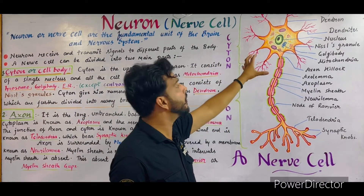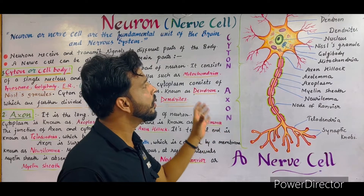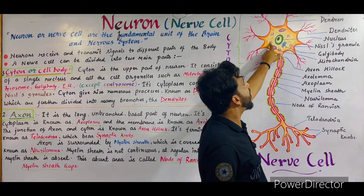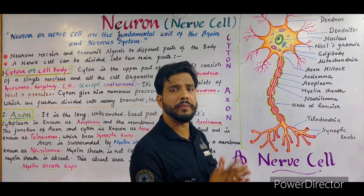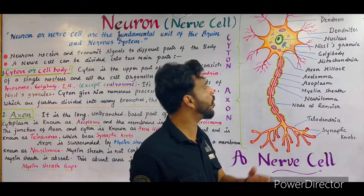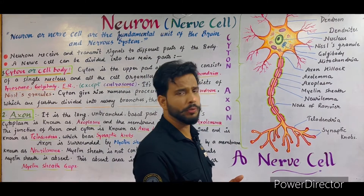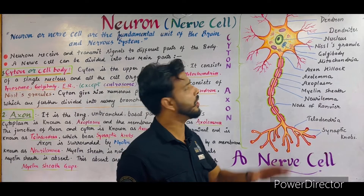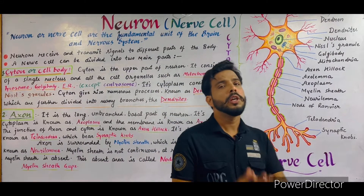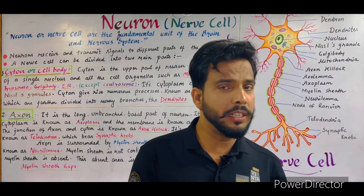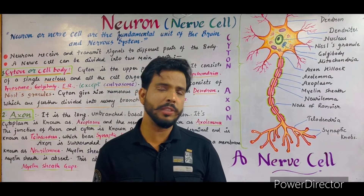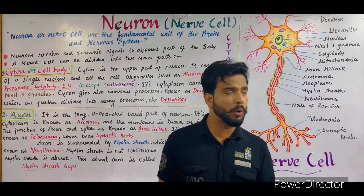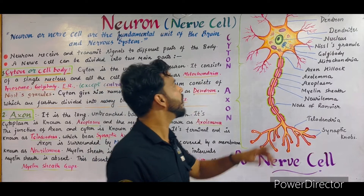The cytone is the upper rounded part of the neuron. The cytone consists of a single nucleus. The cytoplasm of the cytone consists of different kinds of cell organelles such as mitochondria, Golgi complex, endoplasmic reticulum, etc. One important thing: centrosomes or centrioles are absent in the cytoplasm of neurons because neurons are unable to divide. As we know, the centrosome helps in cell division, so without a centrosome, cell division is not possible in the neuron.